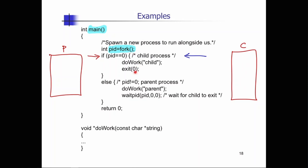Meanwhile, in the parent process, PID is non-zero, so it jumps to the else branch, passing the string 'parent' to doWork. Once doWork finishes, the parent calls wait, waiting for the child to exit. Once the child exits, the parent does return zero — a successful execution of the parent program. That's how the fork system call works and how you check the return value to execute different code in the child and parent. You could also run a completely different program in the child using exec, as shown in the next example.